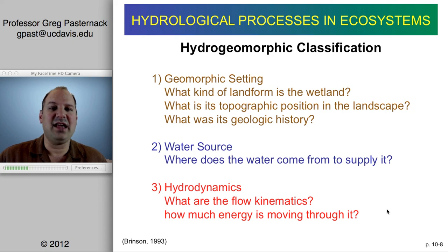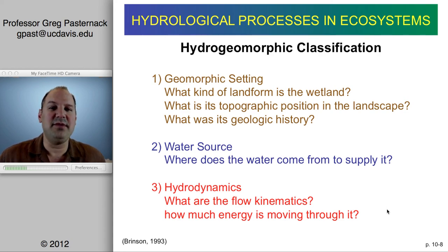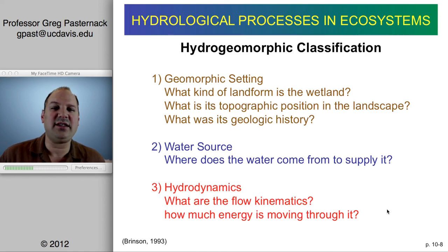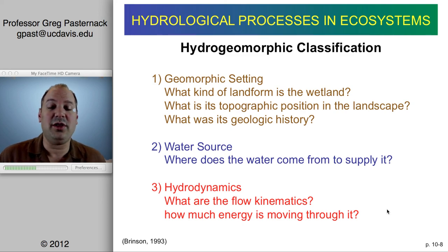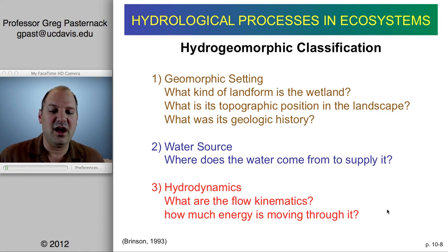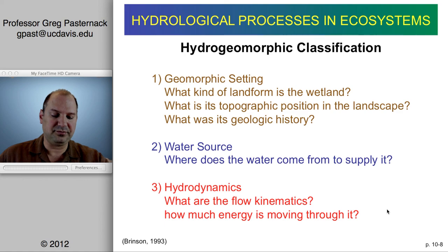The last category has to do with the energetics of the flow through the system — what we call hydrodynamics. Flow kinematics means what are the depths and velocities and how they're changing through time. It comes down to how aggressive the environment is. In a very aggressive, high-energy environment, you're probably not going to have a lot of organic material accumulating, and it's more likely to be inorganic. The directionality of water flow is important as well.